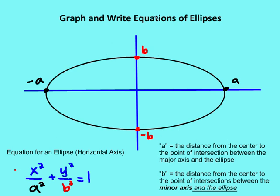So let's talk about how we're going to write an equation for an ellipse and what it would look like. We have two different equations that look very similar, but they identify two different ellipses. In both cases, we have two variables x and y, both squared. What changes the ellipse is whether the a value — which is the distance from the center to the vertex — is underneath the x or the y value.